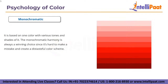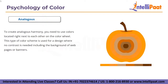Designers have distinguished basic color schemes that work effectively. Monochromatic — based on one color with various tones and shades — is always a winning choice since it's hard to make a mistake and create a distasteful scheme. For analogous harmony, you use colors right next to each other on the color wheel; this is used when no contrast is needed, such as for webpage backgrounds or banners.